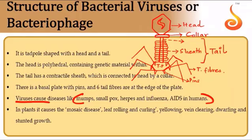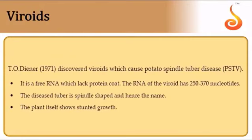Viruses cause many deadly diseases in humans, including the coronavirus. In plants, they cause mosaic disease, and symptoms include leaf rolling, curling, yellowing, dwarfing, and stunted growth.